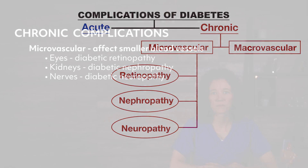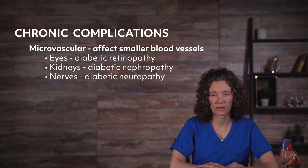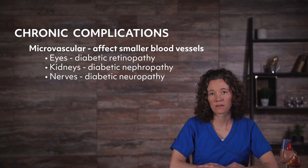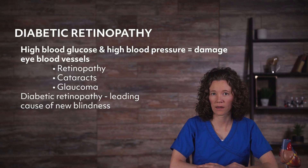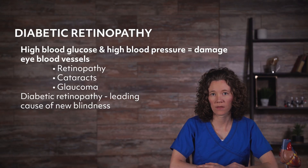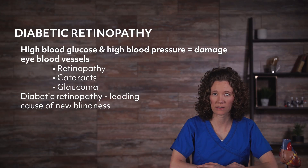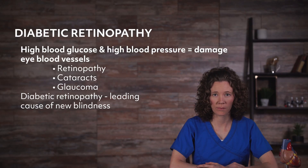Microvascular complications affect the smaller blood vessels — such as the eyes, leading to diabetic retinopathy; kidneys, leading to diabetic nephropathy; and nerves, leading to neuropathy. The effects of high blood glucose as well as high blood pressure can damage eye blood vessels, causing retinopathy, cataracts, and glaucoma. Diabetic retinopathy is the leading cause of new blindness among adults 20 to 74 years old in the United States. High blood pressure also accelerates the development and progression of retinopathy.